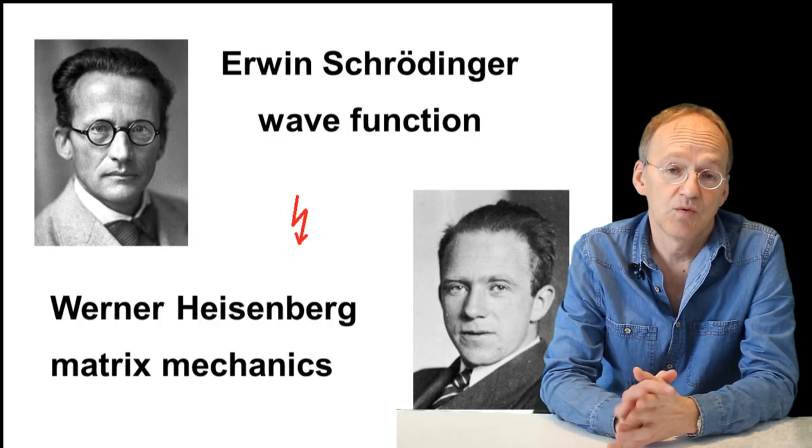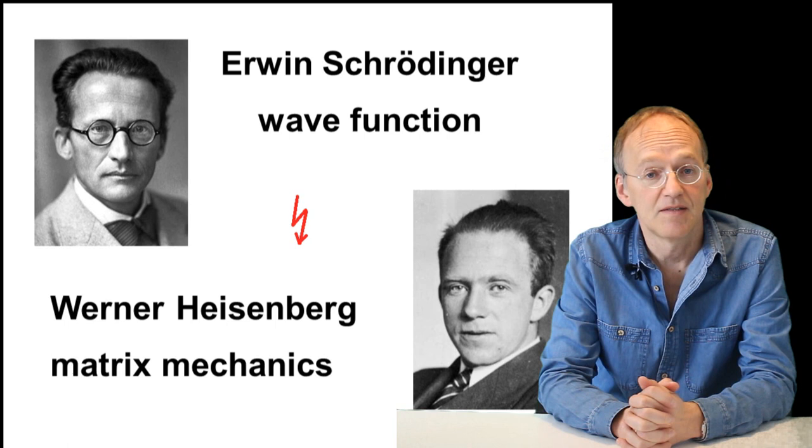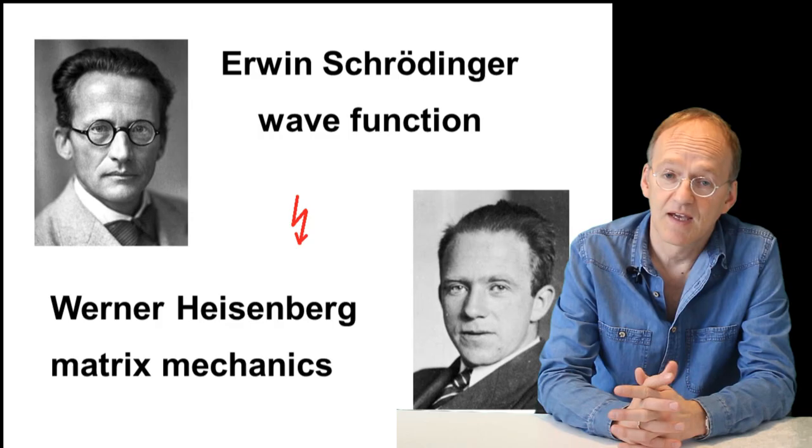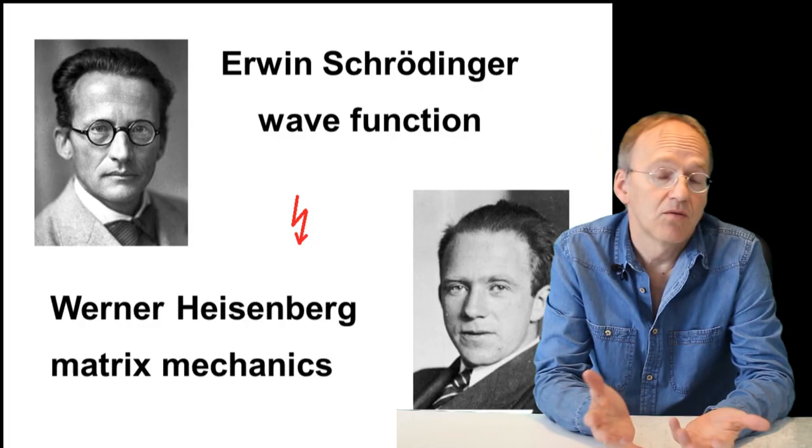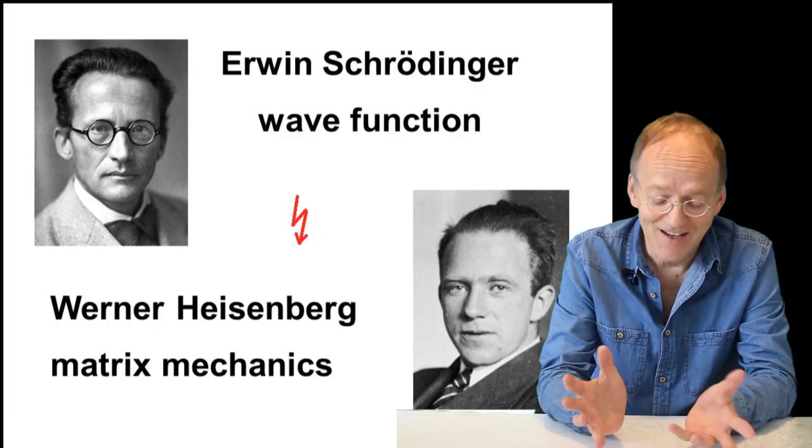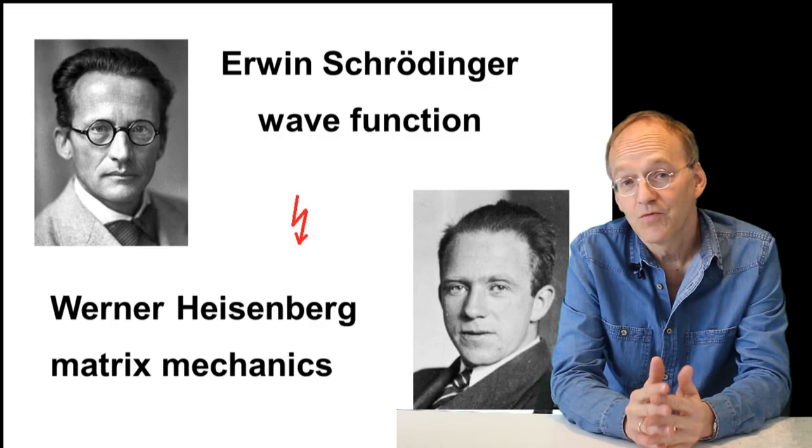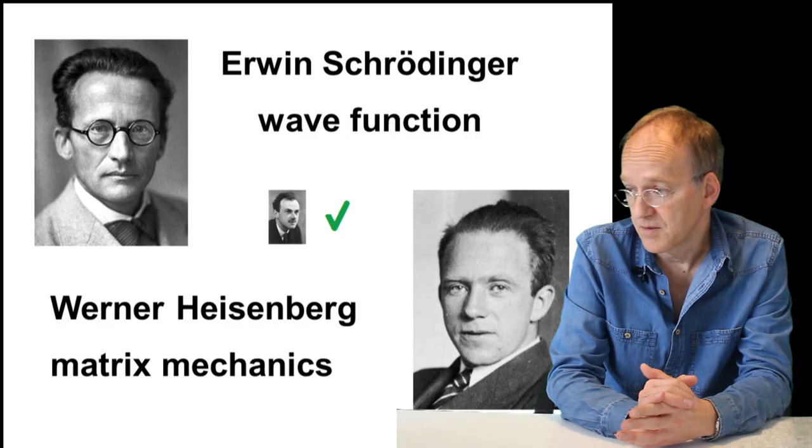At the time there were two competing versions of quantum mechanics. Werner Heisenberg had developed his matrix mechanics and Erwin Schrödinger had the ingenious idea of a wave function, but these two versions seemed to be totally incompatible at the time. Schrödinger and Heisenberg didn't like each other's theory, but Dirac managed to prove that they were indeed the same thing. This was an important problem to be solved at that time.